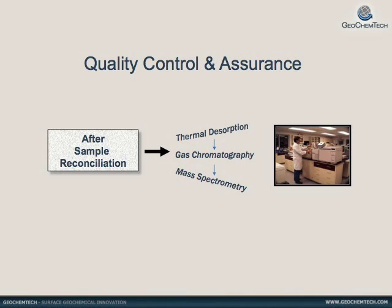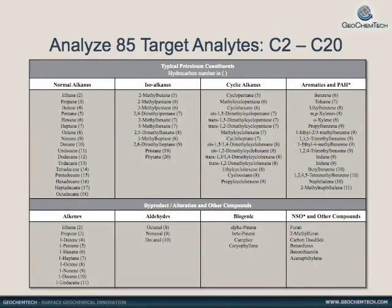Compounds in the nanogram levels are detected in concentrations as low as one part per trillion. Over 150 volatile compounds can be measured, as needed, for the different applications.